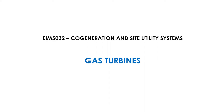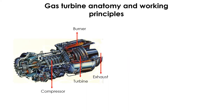In this chapter, we will learn the basics of gas turbine, one of the components in cogeneration and site utility system. The basic principle of gas turbine consists mainly of the compressor, as seen in this figure, and the turbine.